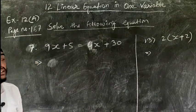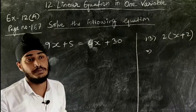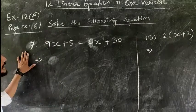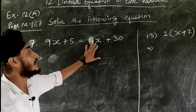Question number 7 and question number 13. If you understand these two questions, then the rest of the questions will be easy for you, so please pay attention. Question number 7: 9x plus 5 equal to 4x plus 30.